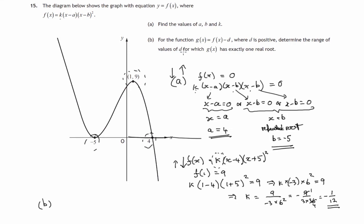...possible values for which g of x has exactly one real root. Now that means if we're solving g of x equals 0, we get one answer. In other words, that's where the new graph cuts the x-axis. We require one point only for that new graph. That's this old graph, but slid down parallel to the y-axis. We require this new graph to cross the x-axis at only one place.